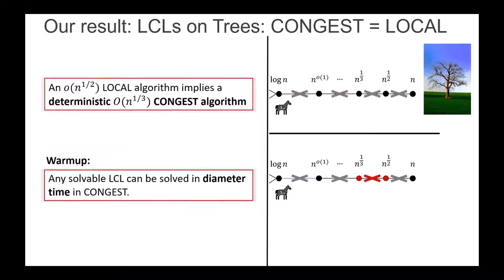Now I will explain how we obtain one of these gaps and how we prove it, and what the respective algorithm is. The formal statement — focusing on this red x, though all the x's up here are proven with a similar idea — states: if you have an LCL problem which admits a LOCAL algorithm with complexity faster than O(√n), then there also exists a deterministic CONGEST algorithm with complexity n^(1/3). This implies all these gaps.